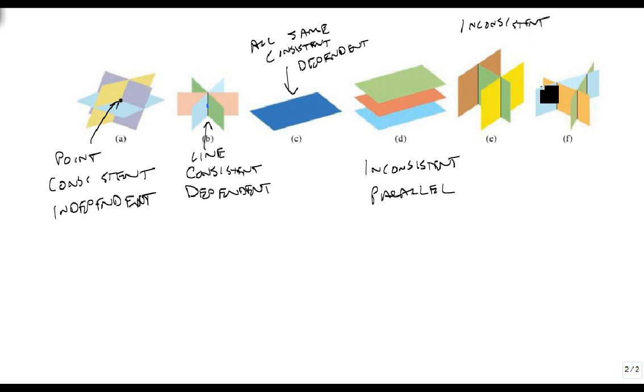Now the last case that we want to look at is this weird teepee-looking thing. This is also inconsistent because there's nowhere that all three of them agree. There's places where two of them agree, but nowhere that they all three agree.